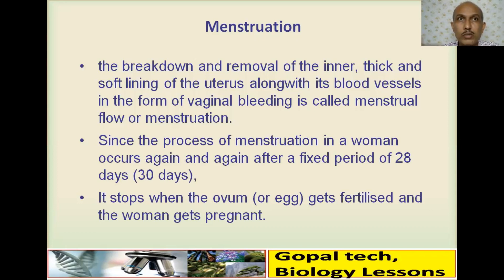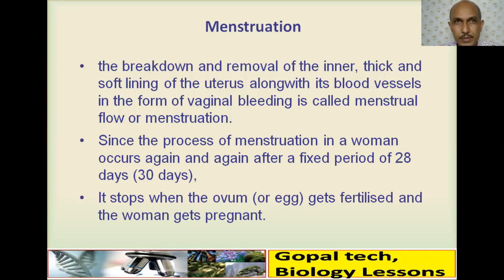Menstruation will remain absent for five or six months, especially during lactation when the mother is feeding the baby. Otherwise, after five to six months, it will repeat again.